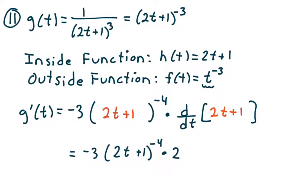Problem number 11: g of t equals 1 over (2t plus 1) to the 3rd, which I'll write as (2t plus 1) to the negative 3. My inside function is h of t equals 2t plus 1. My outside function is f of t equals t to the negative 3. And f prime of t is negative 3t to the negative 4th — that's just the power rule.